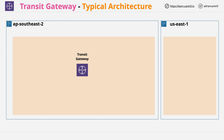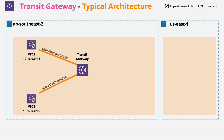Transit Gateway, as you've learned previously, is a hub-and-spoke architecture, so it can be connected to various other networking types and networking objects within AWS. For example, VPC1 and VPC2 on the left using VPC attachments. It can also connect to on-premises networks via VPN attachments, where it's used as a termination point for the VPN tunnels rather than a virtual private gateway.